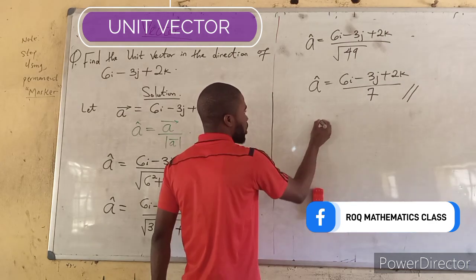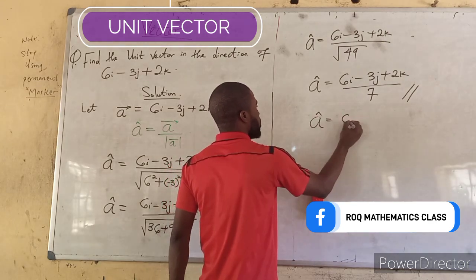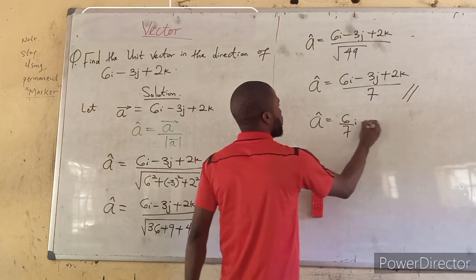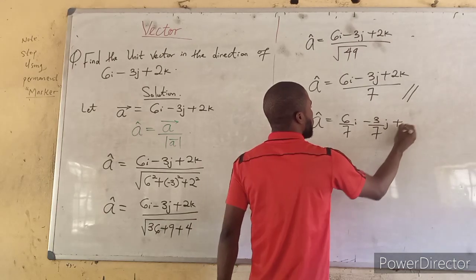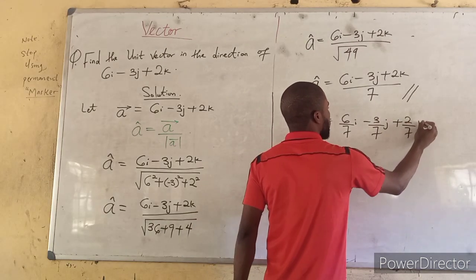You can leave your answer like this or you can split it to be 6 over 7i minus 3 over 7j plus 2 over 7k.